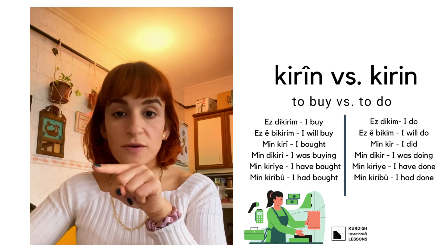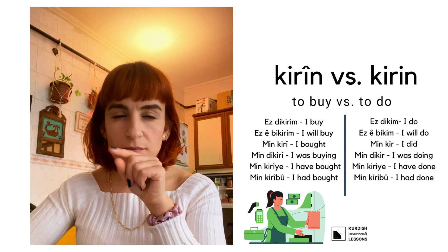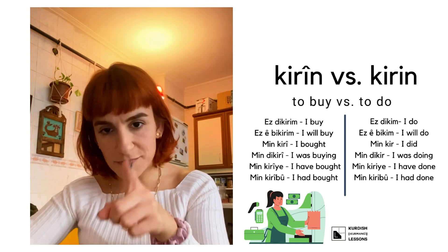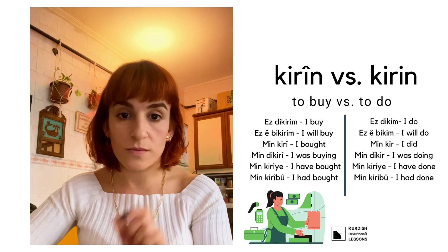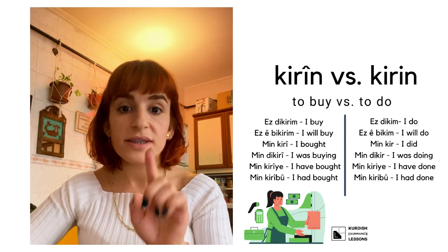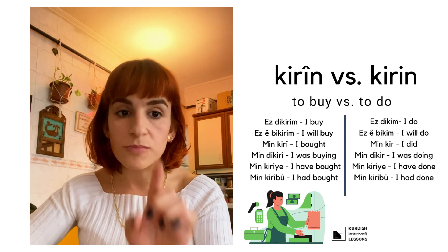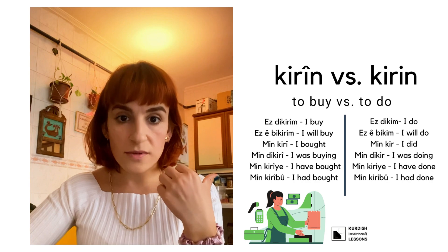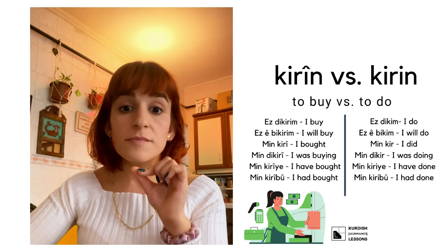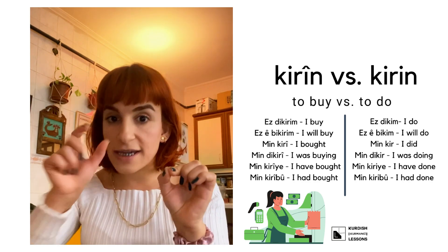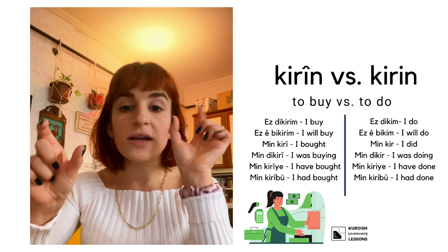For the past perfect: 'min kri boo' means 'I had bought,' and for 'to do,' the past perfect is also 'min kri boo.' Be careful — that long 'a' sound changes everything between the two verbs.